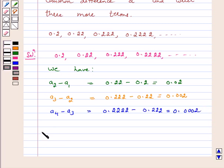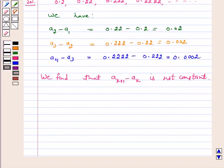We find that ak plus 1 minus ak is not same every time. That is, it is not constant.